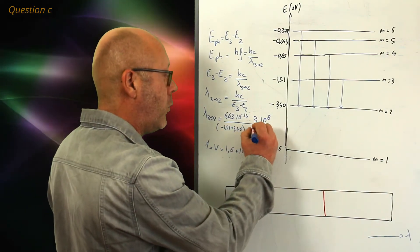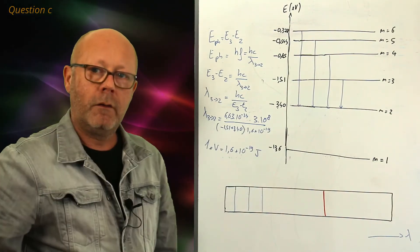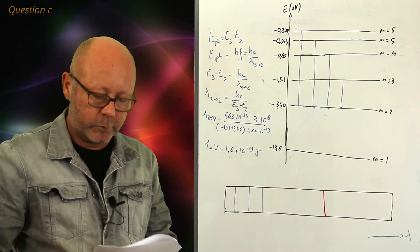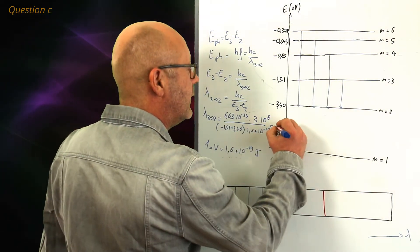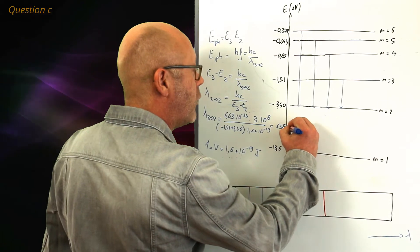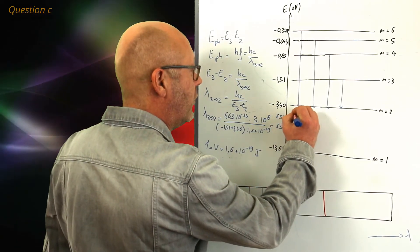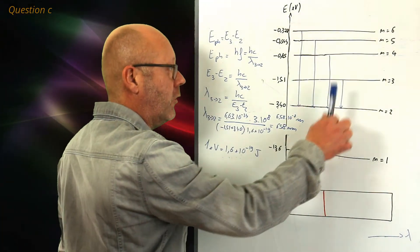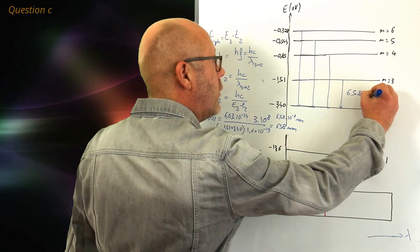Therefore, I just multiply by 1.6 by 10 to the minus 19. The answer I find, let me look at my notes, for this transition, is 658 nanometers, or 6.58 by 10 to the minus 7 meters.